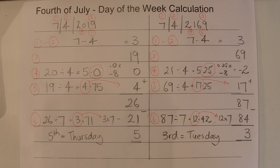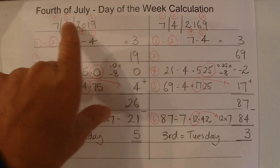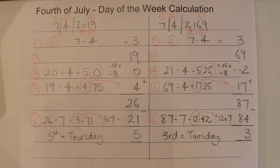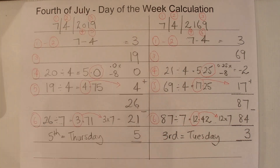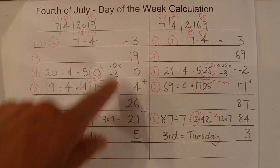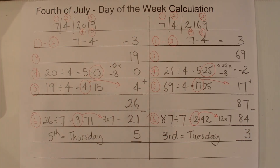That's a simple formula to calculate what day of the week the 4th of July — American Independence Day — will fall on in any year. Just follow those steps and work out what day of the week it is. Hope you've enjoyed this video, thanks for watching, and goodbye for now.